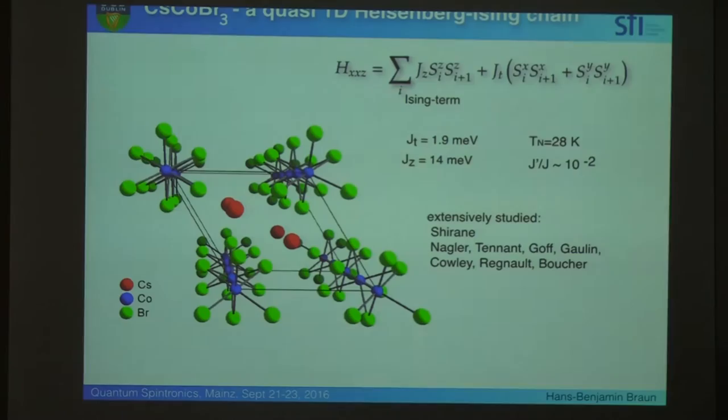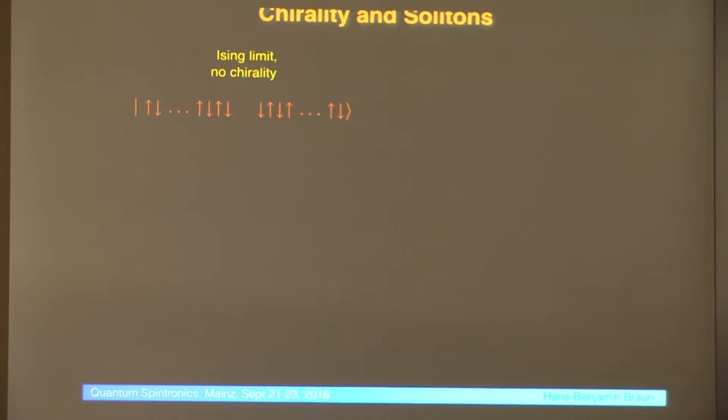So, in this case, I write it now, unlike some of the people yesterday, I don't use a delta, I use explicitly JZ, JT, for reasons which you will see. So, you have an Ising term, and you have an XY term, and actually the XY term is much smaller than the Ising term. So, you just add a little bit of quantum fluctuations to the Ising system.